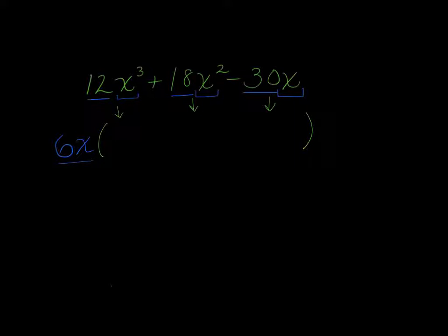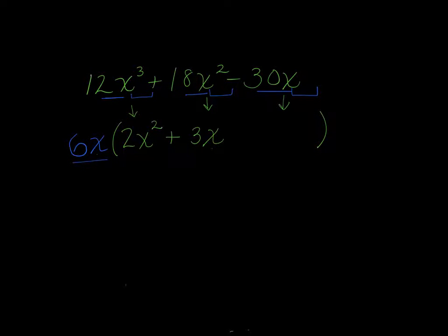Let's ask ourselves, 6x times what would give us 12x to the third power? It would be 2x squared. And 6x times what would give us 18x squared? 3x. Very good. Because we already have an x to the first out here, so x times x would give us the x squared. And finally, 6x times what missing factor would give us a negative 30x? Negative 5. Exactly. The x is already here, so our last term will just be a constant.